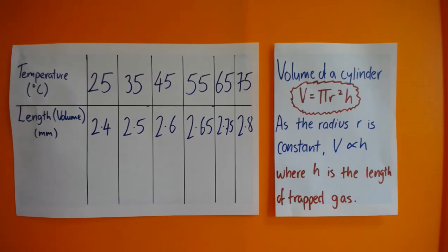We can take the length of trapped gas to be the volume because the volume of a cylinder is V equals pi R squared H. Because the radius was the same for all of them and its constant, V is therefore proportional to H where H is the length of trapped gas.